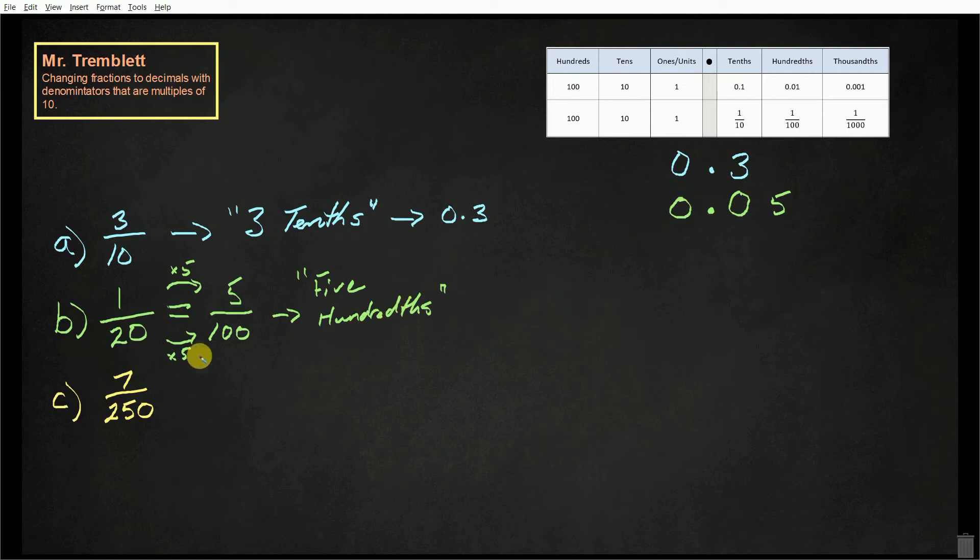So if I was going to write 1 twentieth, it's the same as saying 5 hundredths, and I could write that as 5 in the hundredths place value. So 0.05 would be my decimal representation of 1 twentieth.